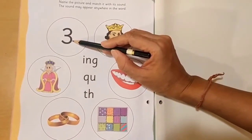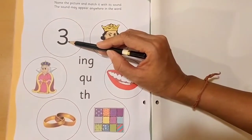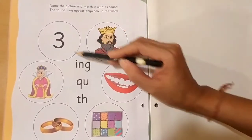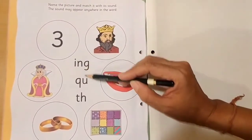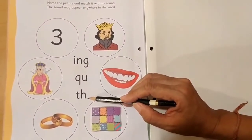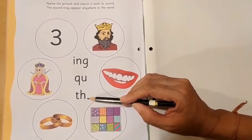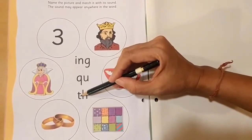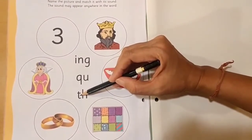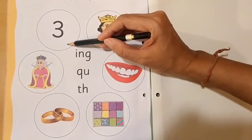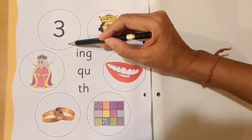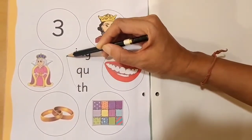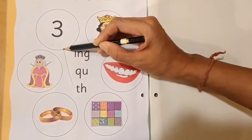What is this? This is number 3. So, which sound is coming — Ing, K, or Th? It is TH which is coming in the word 3.